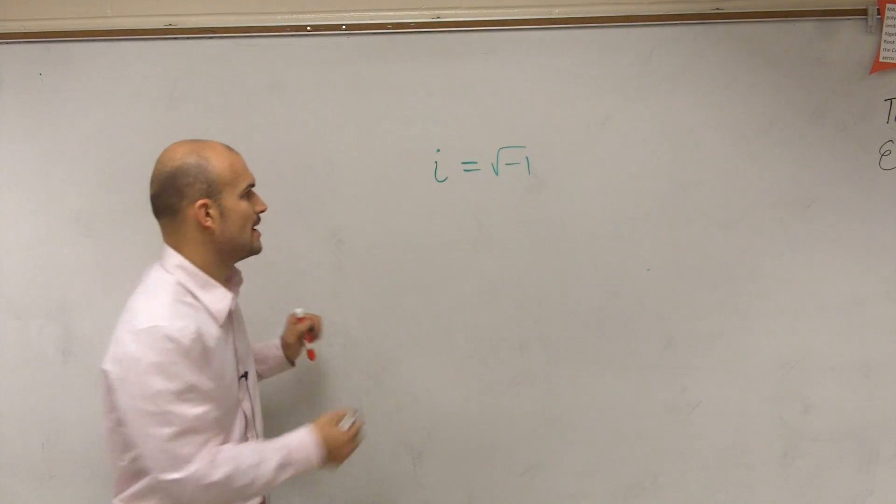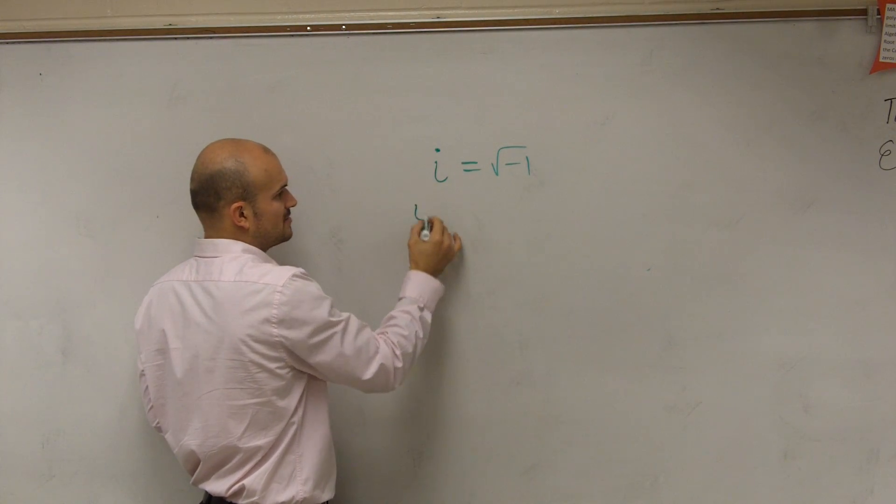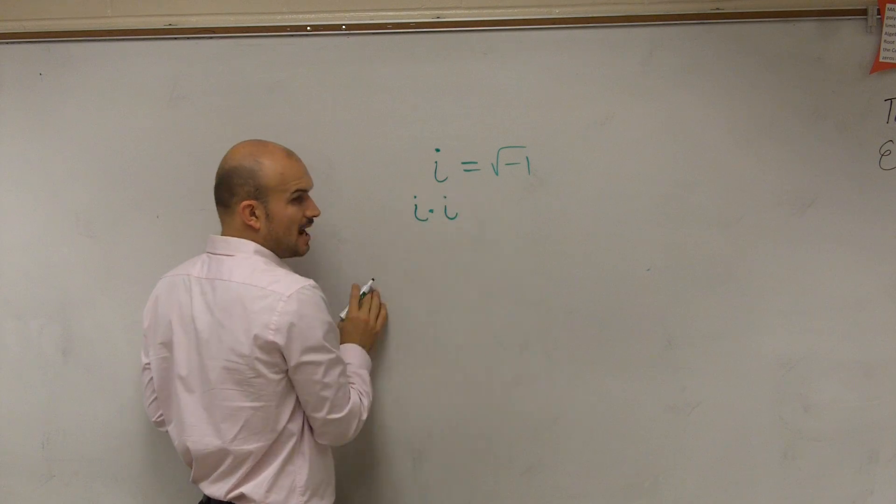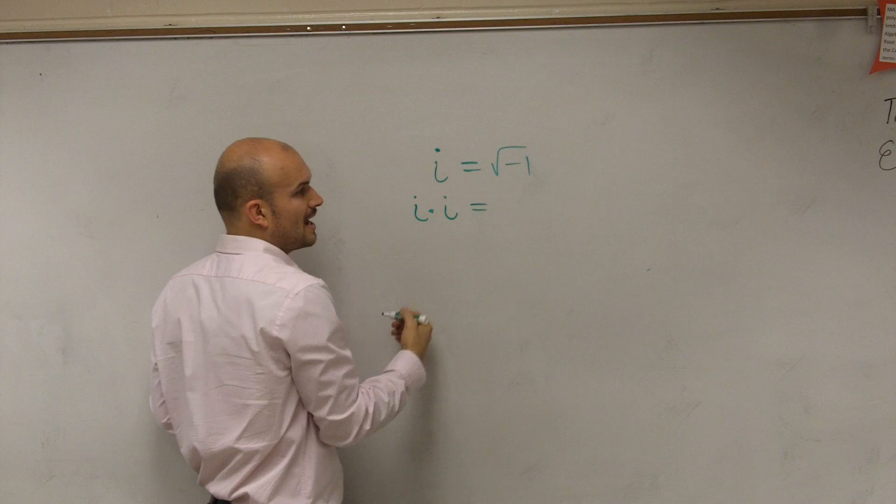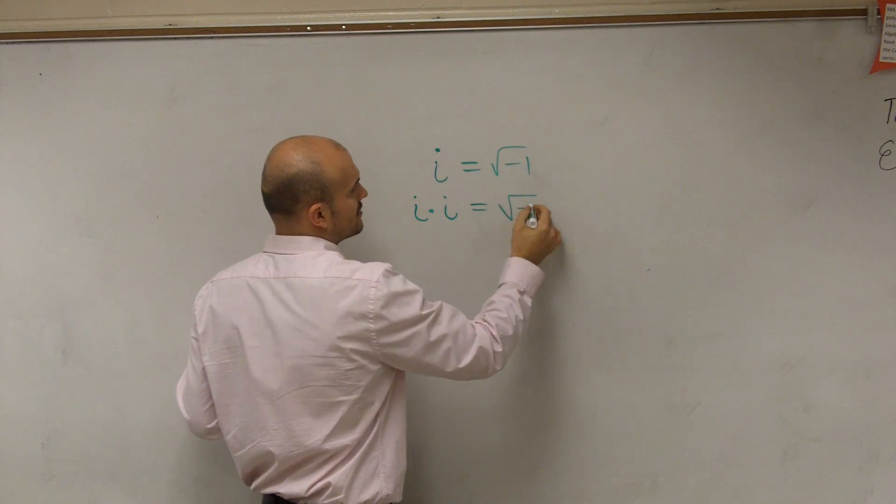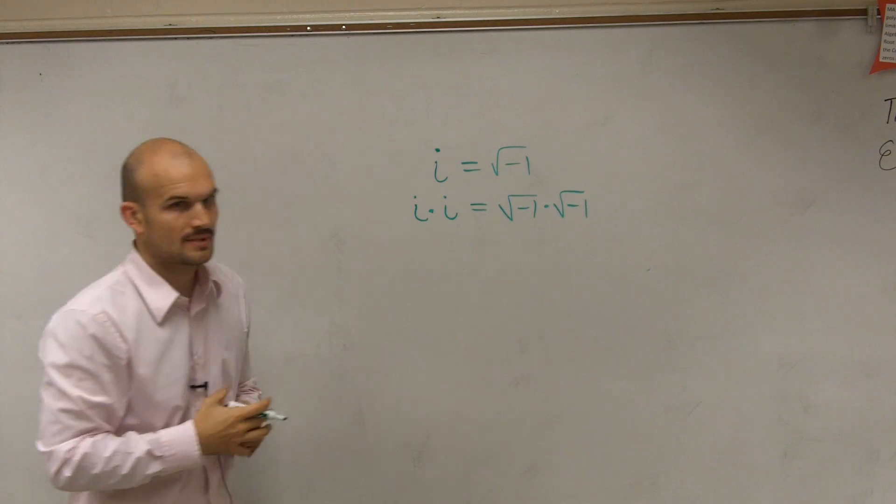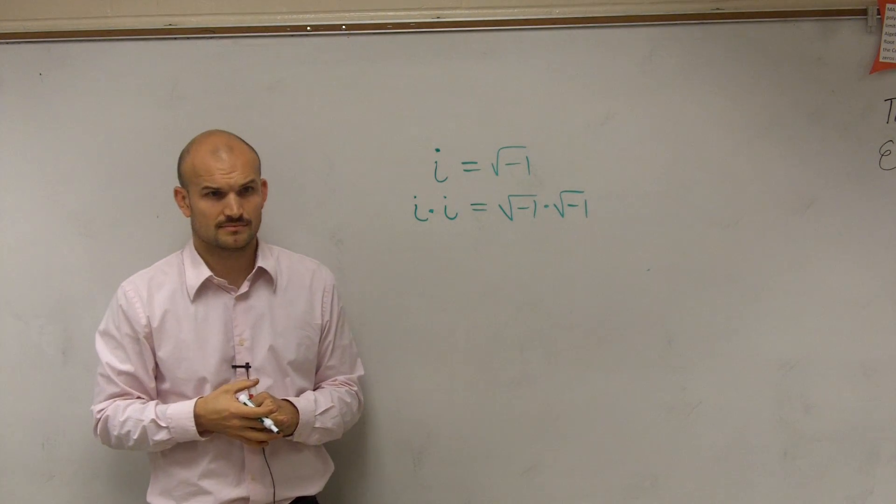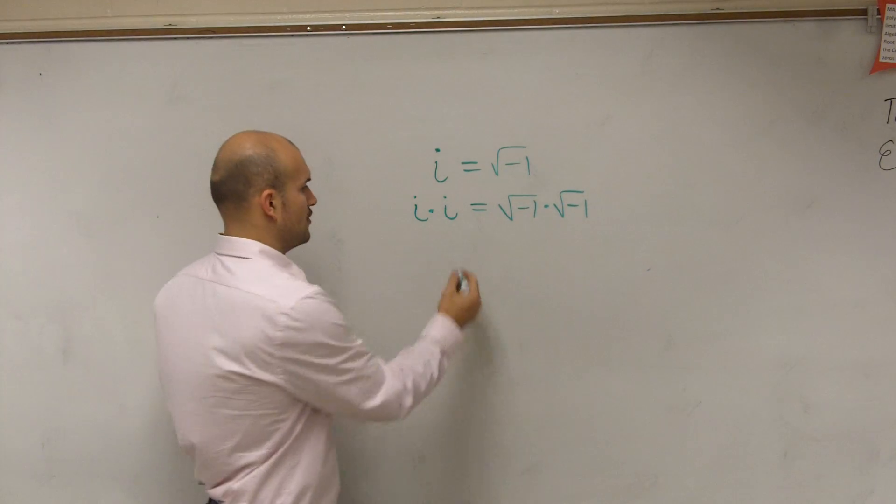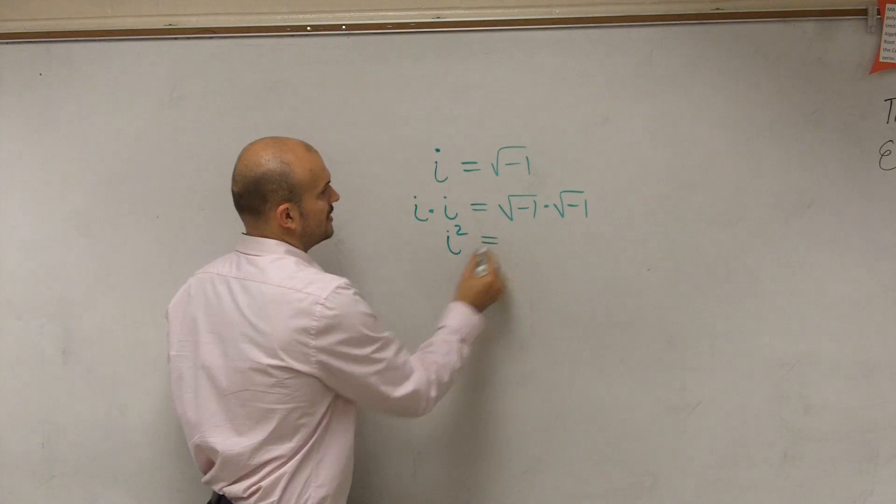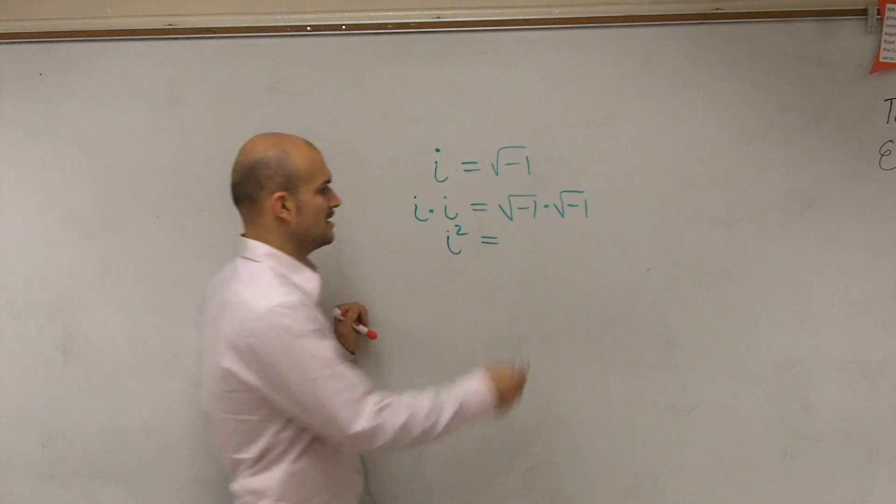So if I said i to the higher power, what would i squared be? Well, to get i squared, you have to multiply i times i, right? So therefore, I'm going to multiply this by square root of negative 1 times square root of negative 1. i times i is the same thing as square root of negative 1 times square root of negative 1. So therefore, we get i squared equals, well, what's the square root of a number times the square root of a number? Just negative 1.